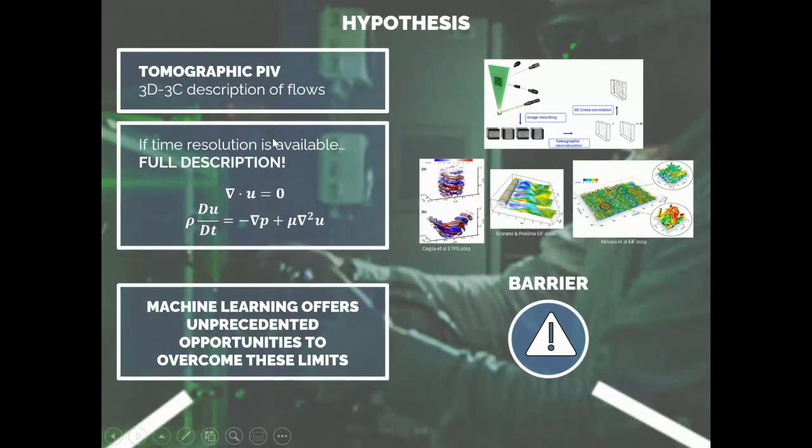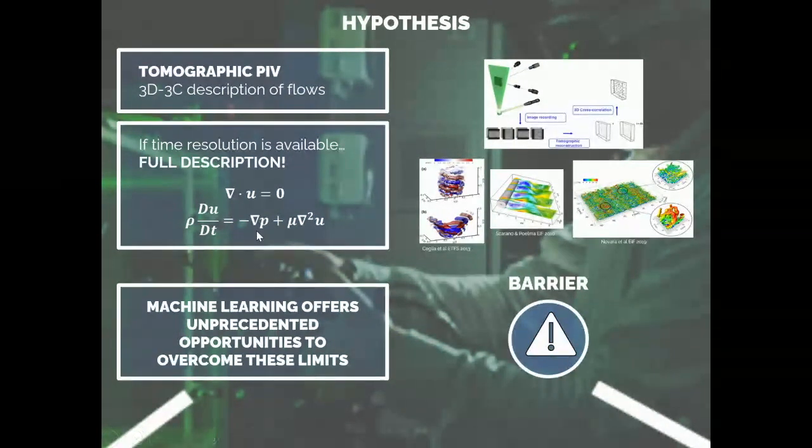So the nice thing would be that if we have the three dimensional three component flow field, and in these techniques we have experience, and tomography has been demonstrated of being flexible in many flows, and if we also had time resolution, that would be really nice, because we could enter into the Navier-Stokes equations and we would have everything, also the Lagrangian acceleration. The only thing that would be missing is the gradient of the pressure. So we can actually get the gradient of the pressure from here and compute the pressure after integration.